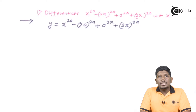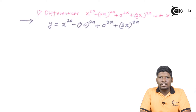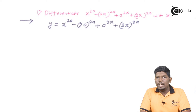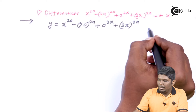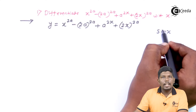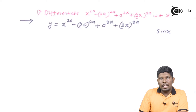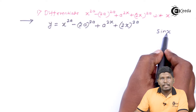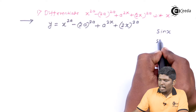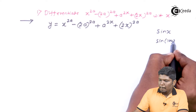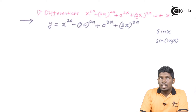Now, first of all, what is a composite function? There are two types of functions. First is called a standard function and second is called a composite function. Any function in which x is replaced by another function is called a composite function. For example, sine x is a standard function, but if I replace x by another term — say sine of log x — I have replaced x by log x, so this function becomes a composite function.